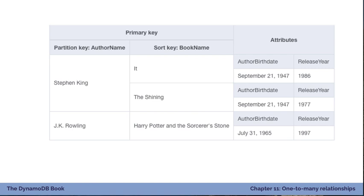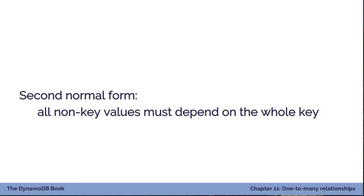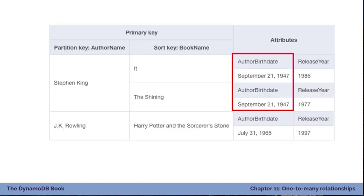In our DynamoDB table, we have a few books by Stephen King and one by J.K. Rowling. The author birth date for Stephen King is stored on two different items — we're repeating that info across multiple items. Thinking back to normalization in Chapter 7, second normal form requires that all non-key values depend on the whole key. To uniquely identify each record we need both the author name and book name, but the author birth date doesn't depend on the whole key — Stephen King's birth date doesn't change across different books. So it only depends on part of the key, violating second normal form.